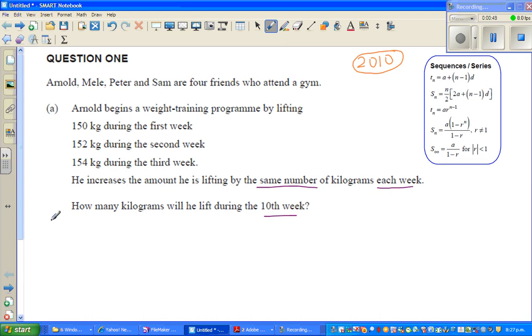Let's write the sequence. The sequence goes like this: he starts at 150, then he lifts 152, 154, and so on. It's good practice to write the sequence so that you have a feeling of it. By looking at the sequence or the pattern of these numbers, they are increasing by 2. This tells me this is an arithmetic sequence.